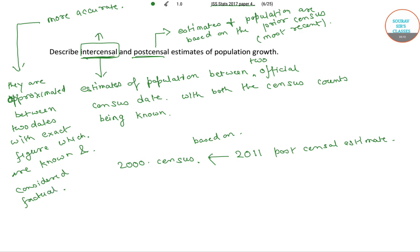Due to this, intercensal estimates are considered more accurate than the postcensal estimates, as they are approximated between two dates with exact figures being known and considered factual.